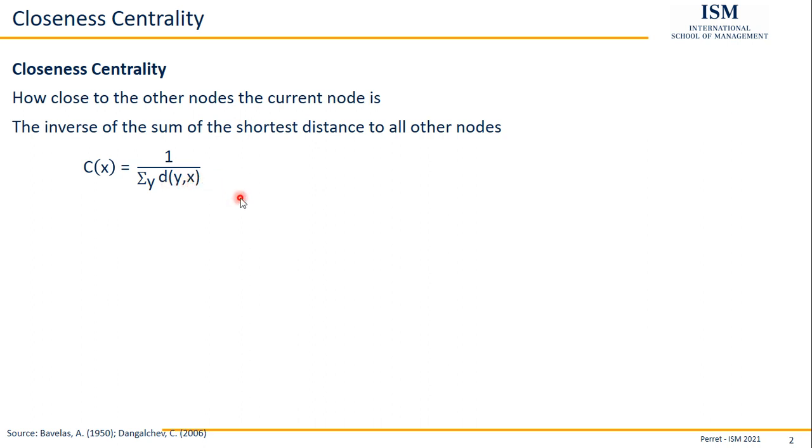This works decently well, but we have a problem if we have a network which is not fully connected, meaning if it's impossible to get from one node to a specific other node. In this case, we simply set the closeness to zero. We could easily imagine this as also setting the distance to impossible, meaning to infinity.